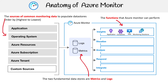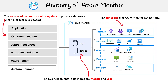For insights, we're getting insights into our virtual machines, our containers, and our applications. For visualization, you might be making dashboards, using Power BI, or creating workbooks. For analysis, you might be using the log analysis or metric analysis tools. For responses, you might want to create alerts or start auto scaling. And for integrations, you might want to use Logic Apps or export APIs to connect things up.